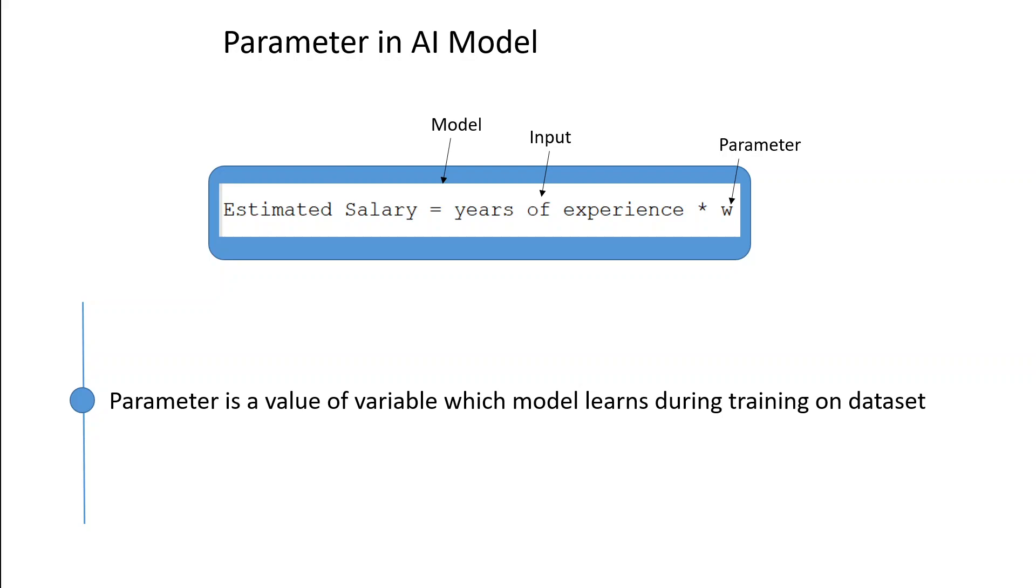In this simple model, the parameter is W, which is the number that you multiply with the year of experience to make the prediction.